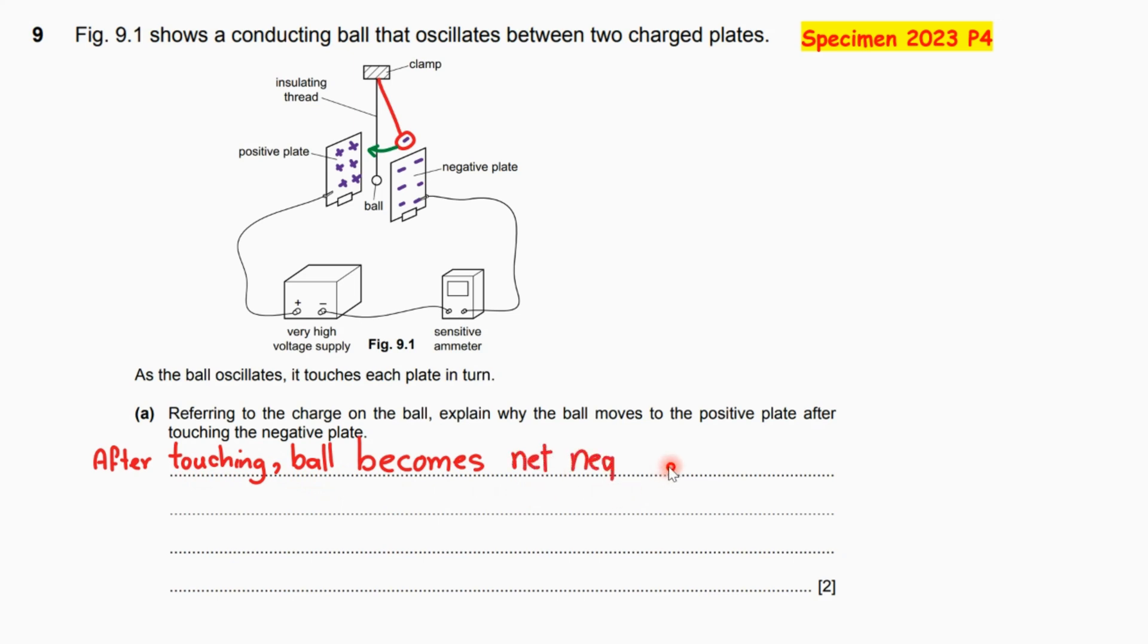You can write negatively charged and it's okay, it's going to be accepted and no problem for this, but I prefer to say that it's net negatively. Net means the sum of the electrons or the negative charges more than the number of the positive charges on the ball.